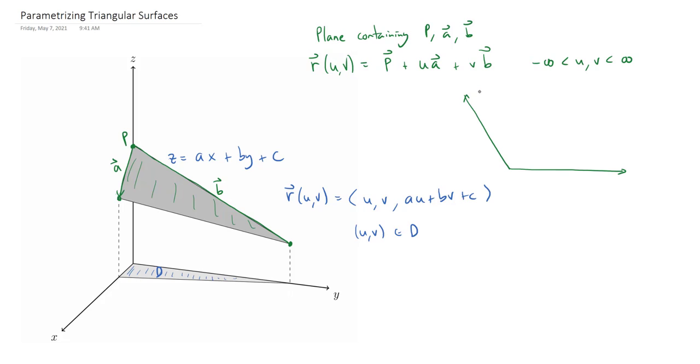So let me draw a different picture. And I'm drawing an obtuse angle here, just so you don't think what I'm doing has anything to do with it being an acute triangle and this works. So we have our point p here, and then maybe we have our a going in this direction, and our b going in this direction.